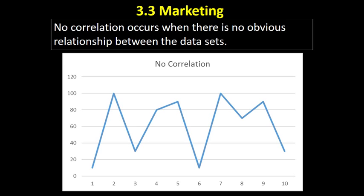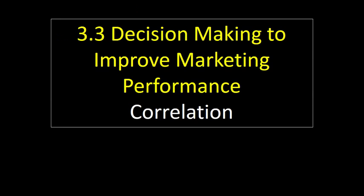We may also find that there's absolutely no obvious relationship between the data sets. An example might be a student's favorite colors and their exam results. So that covers correlation — positive, negative, and the strength of the relationships between the data.